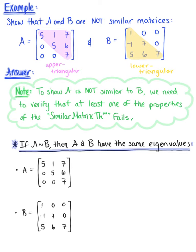They're triangular matrices! So we can recall that if a matrix is triangular, upper or lower, then the eigenvalues are the entries along the main diagonal.